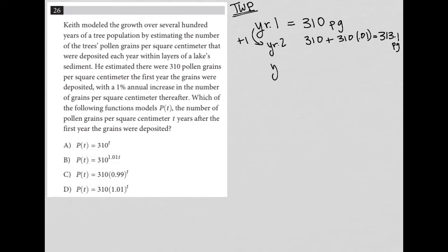And we just keep doing this. Year three would be the 313.1 plus that same number times 0.01, and we get some value. And we just keep going on for however many years. So the next part of this, or the next sentence says,